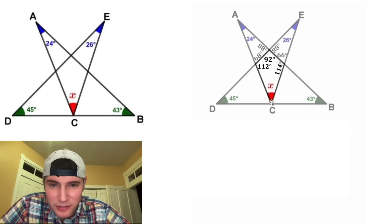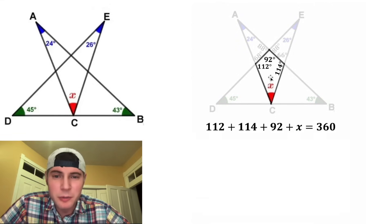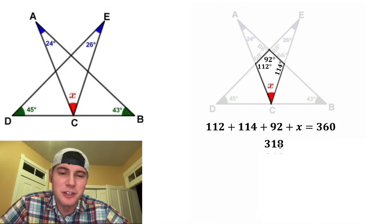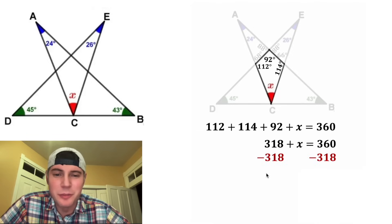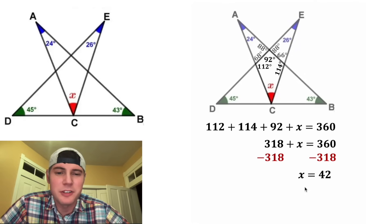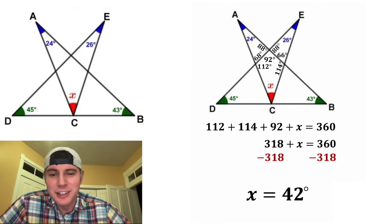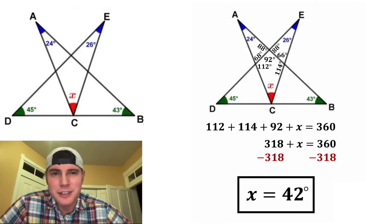And now we're down to this convex quadrilateral right here. We know that all four of these angles are going to add to 360 degrees. Well, 112 plus 114 plus 92 is equal to 318. And then after we subtract 318 from both sides, we get X is equal to 42. And that is the answer to the question, let's put a box around it. How exciting.